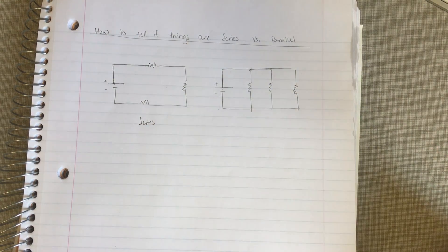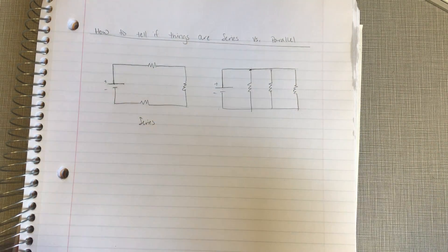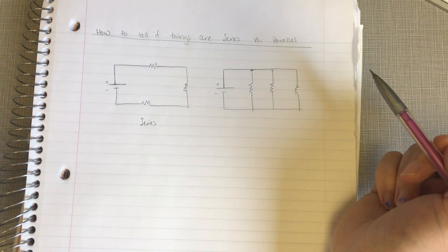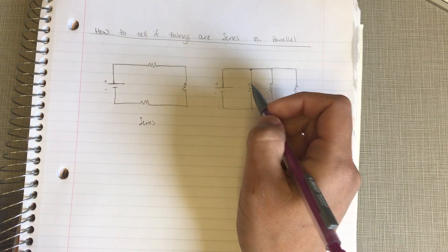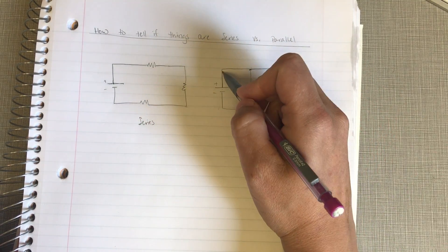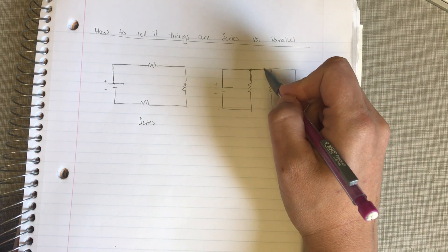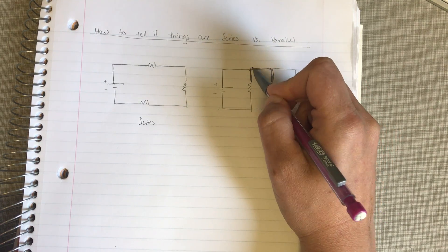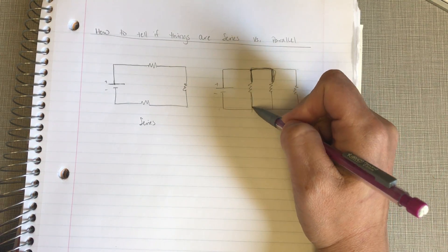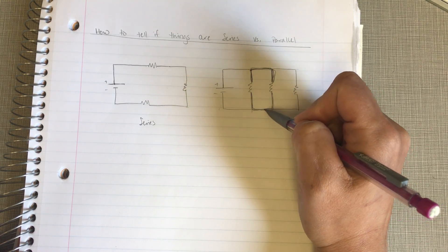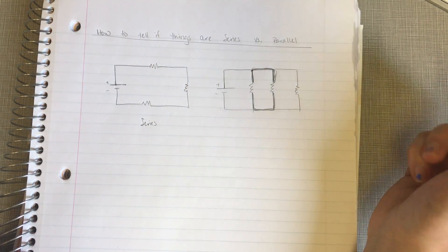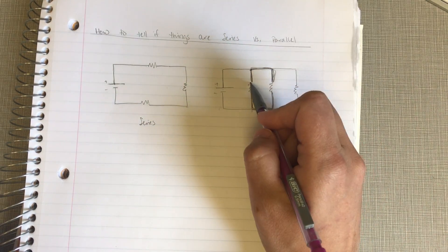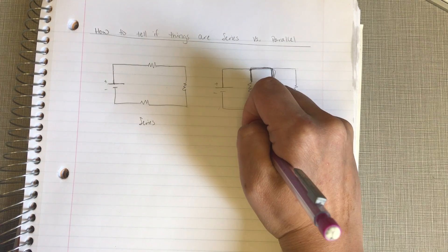So, in particular, two things are in parallel if they share the same chunk of wire on each side. So, in this case, these two resistors share a chunk of wire here, and they share a chunk of wire here. I'm going to grab my colored pens here in a sec, and that will be a little bit easier to see. So, if they have the same chunk of wire on each side, then those are said to be in parallel.